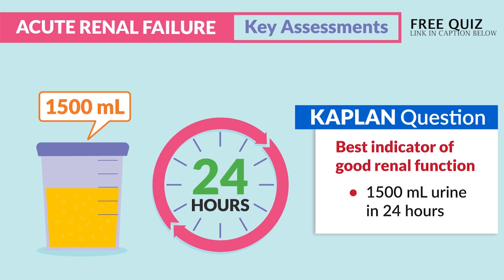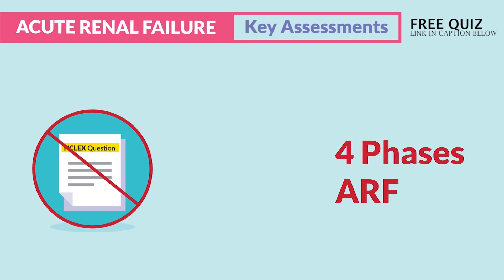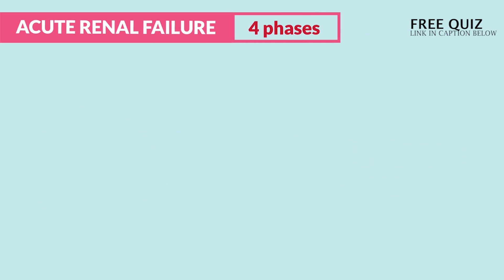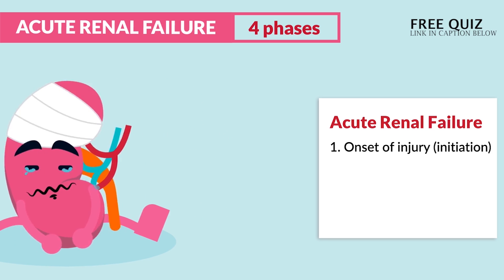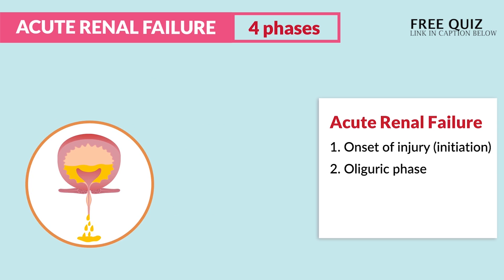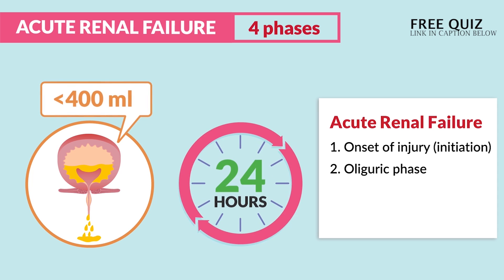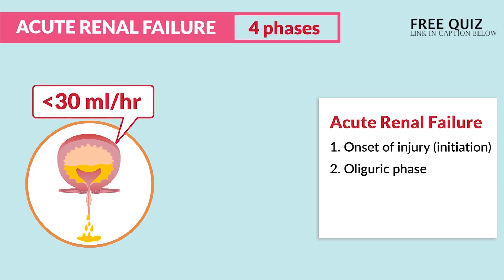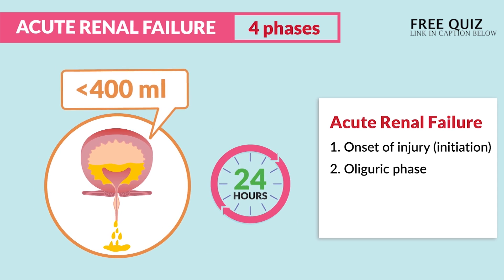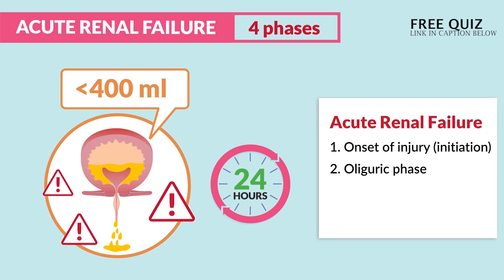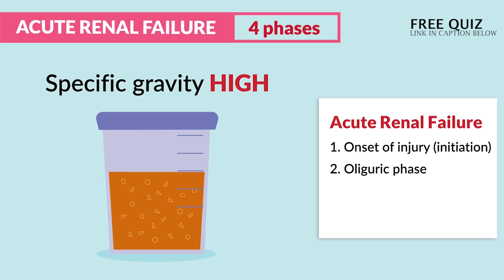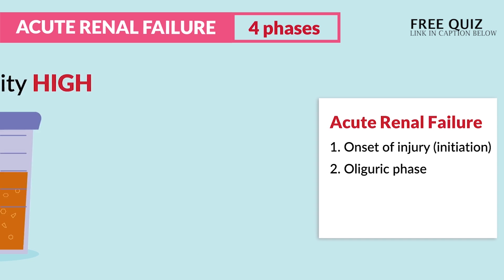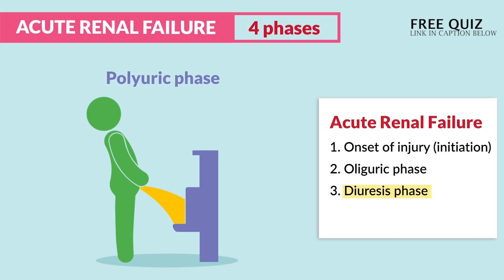The four phases of acute renal failure: Phase 1 is onset of injury, known as initiation — not typically tested. Phase 2 is the oliguric phase — think of the O's in oliguric as low urine output, less than 400 mL in 24 hours. Remember, urine output 30 mL per hour or less means the kidneys are in distress. Urine is very sticky and thick, so specific gravity is high — if urine is dry, the specific gravity is high.